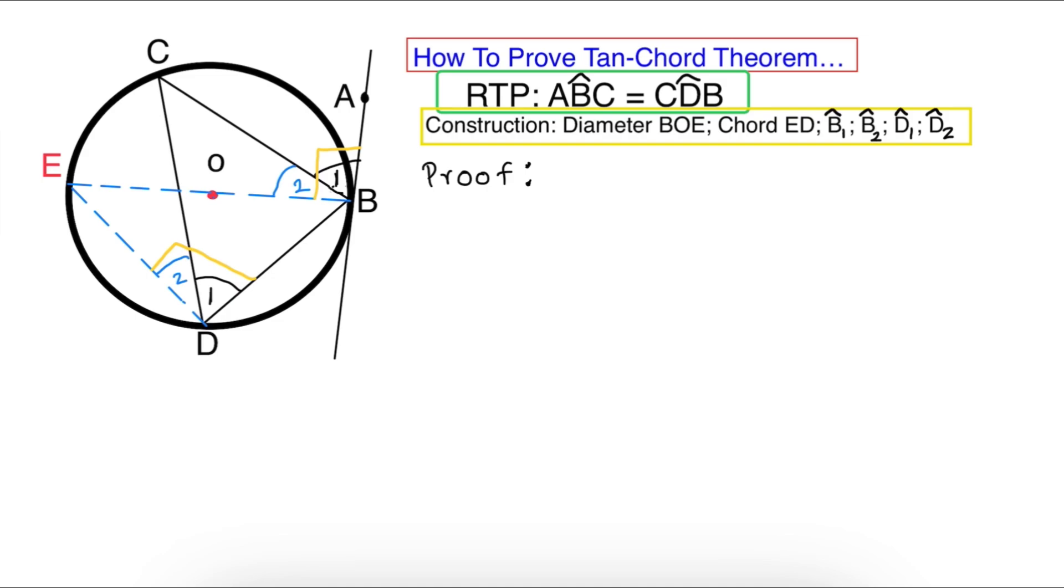You can see at the top there I wrote how to prove tan-chord theorem. The first step is RTP which is Required To Prove. You're gonna write RTP angle ABC equals angle CDB. Then you're gonna say construct: we constructed diameter BOE and we also constructed chord ED.